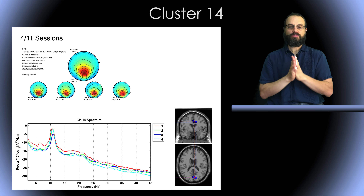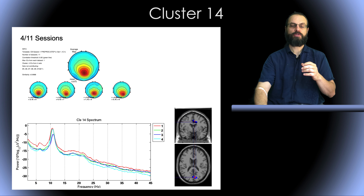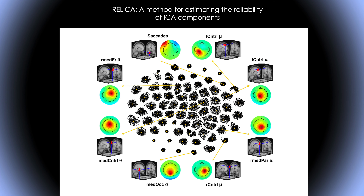To assess the quality of these clusters, we worked with a researcher named Fiorenzo Artoni, who developed a method called Bootstrap ICA. You take the same data from the subject, sample it, and run ICA multiple times. This was done for InfoMax ICA, and has also been tried for the AMICA decomposition. When you run ICA 1000 times, you can assess which components are stable and which are not.